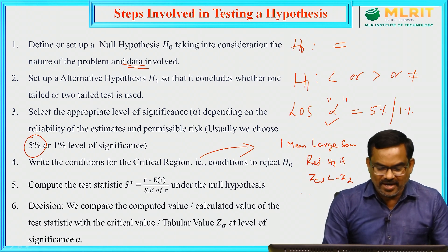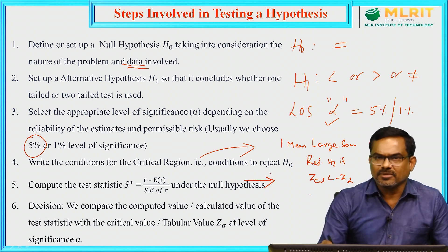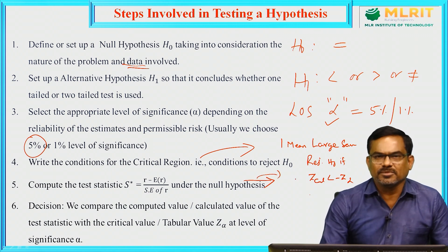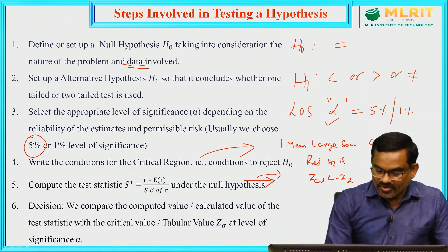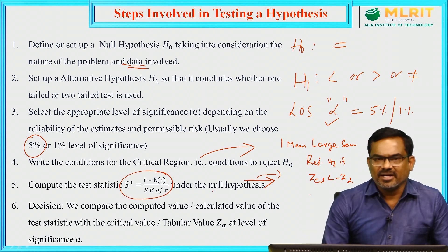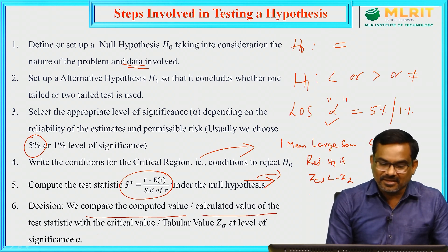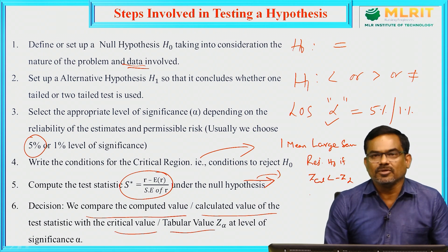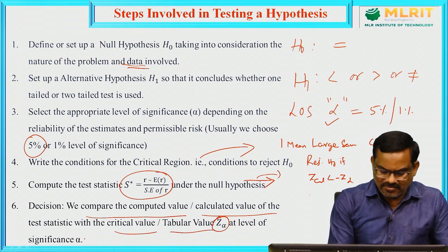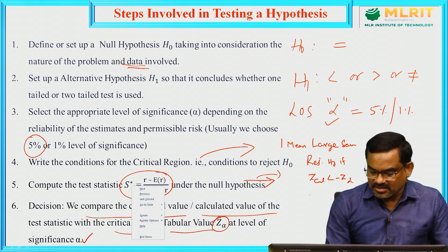Coming to step 5 — the computation part. Here we consider a test statistic. Every practical distribution follows a theoretical distribution, such as the standard normal distribution, t distribution, chi-square distribution, etc. We use a formula to compute the calculated value, which depends on the given data and the different types of tests. Finally, in step 6, we compare the calculated value with the tabular value. Based on the level of significance alpha, we find the tabular value, then compare it with the computed statistic to take the final decision.